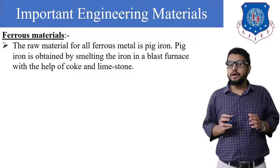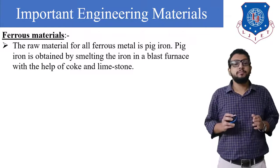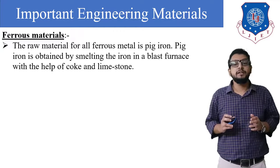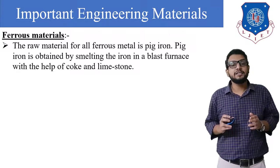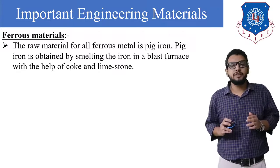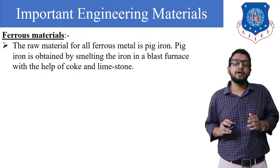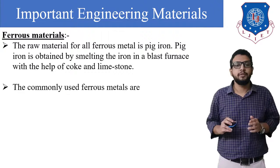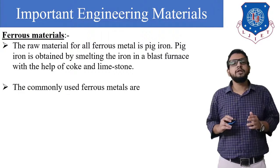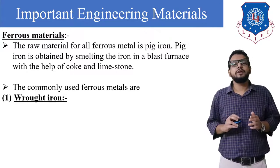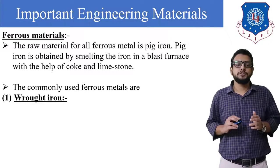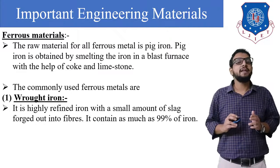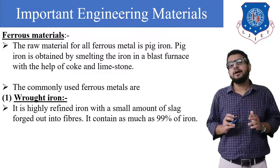The raw material for all ferrous metals is pig iron. Pig iron is obtained by smelting iron in a blast furnace with the help of coke and limestone. The commonly used ferrous metals are: first, wrought iron.